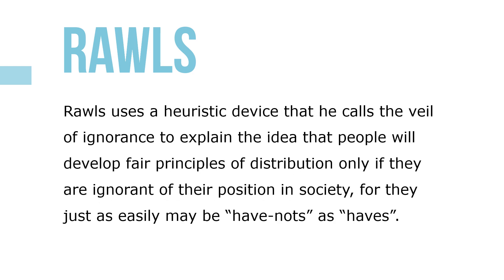Rawls uses a heuristic device that he calls the Veil of Ignorance to explain the idea that people will develop fair principles of distribution only if they are ignorant of their position in society, for they just as easily may be have-nots as haves.